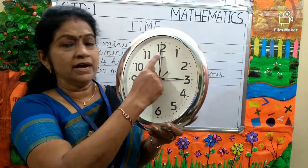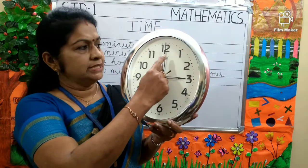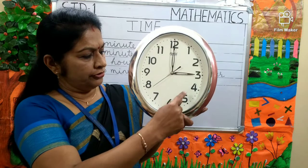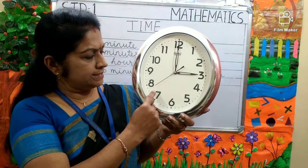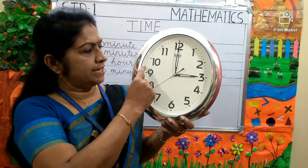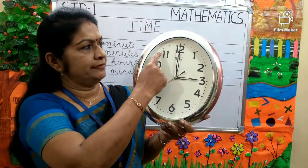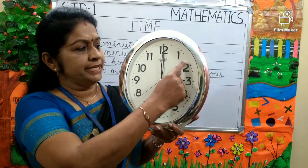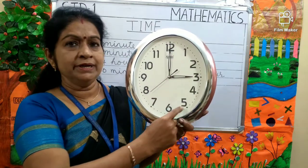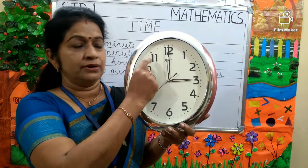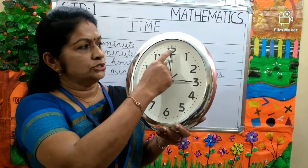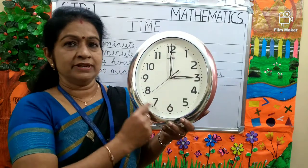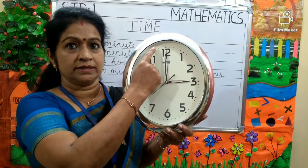Here are numbers from 1, 2, 3, 4, 5, 6, 7, 8, 9, 10, 11 and 12. The minutes between each number is 5 minutes. So, total 60 minutes will be there in the round clock.